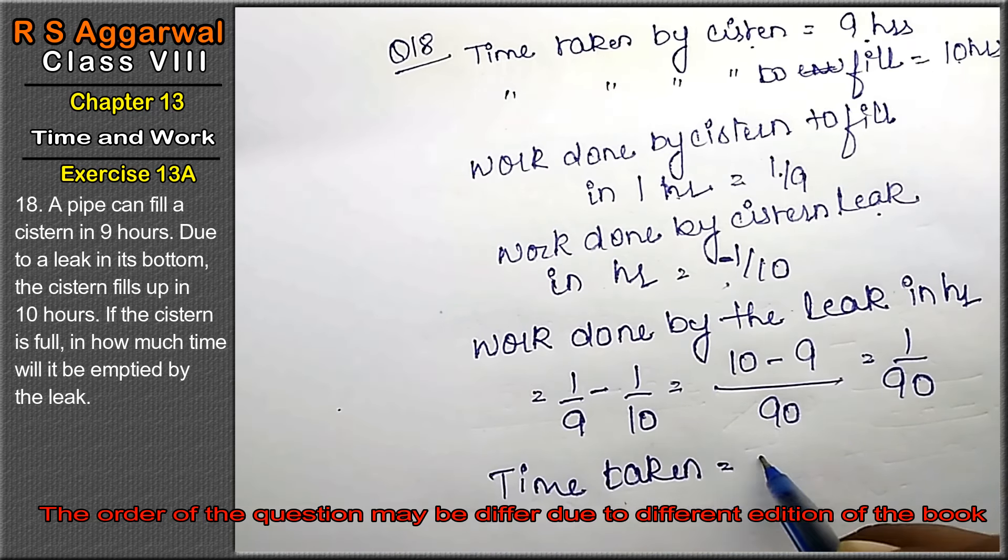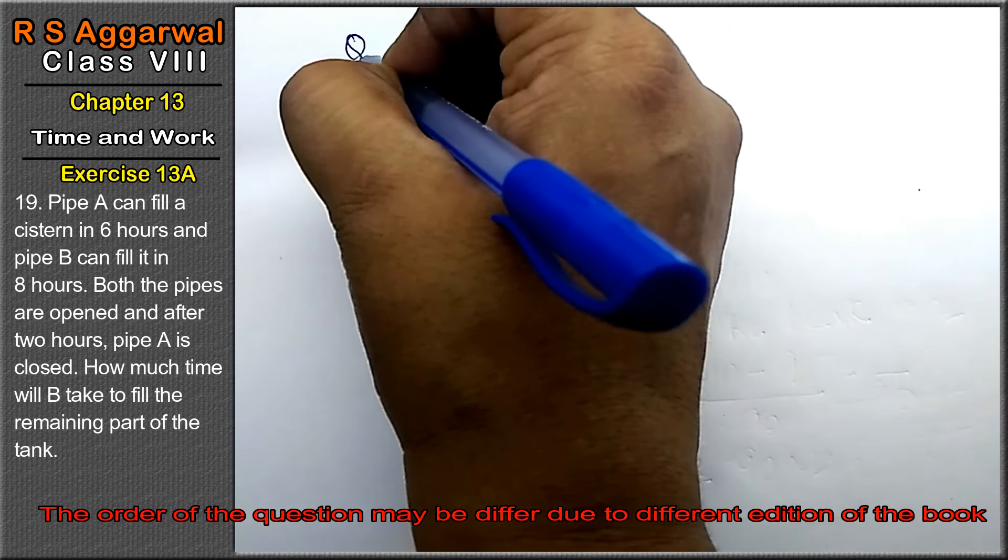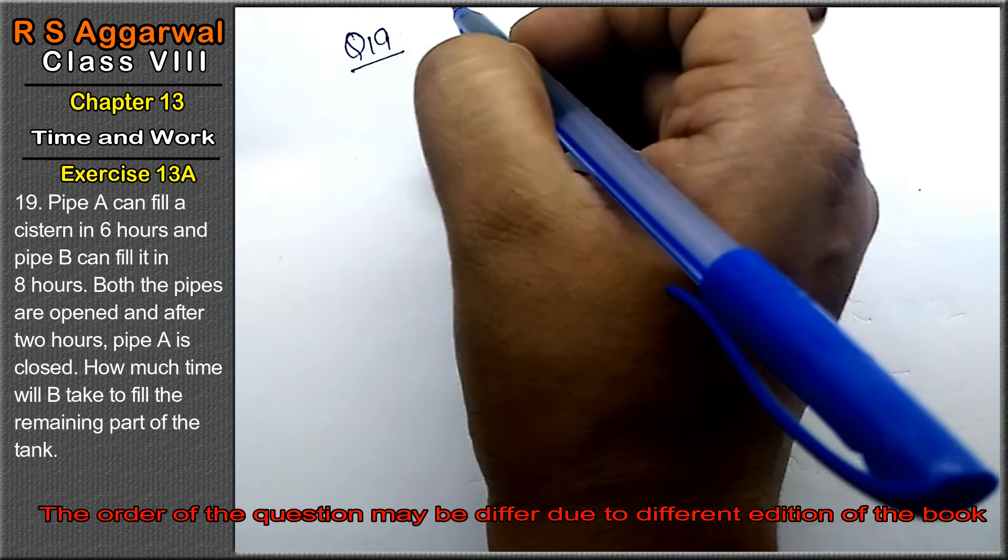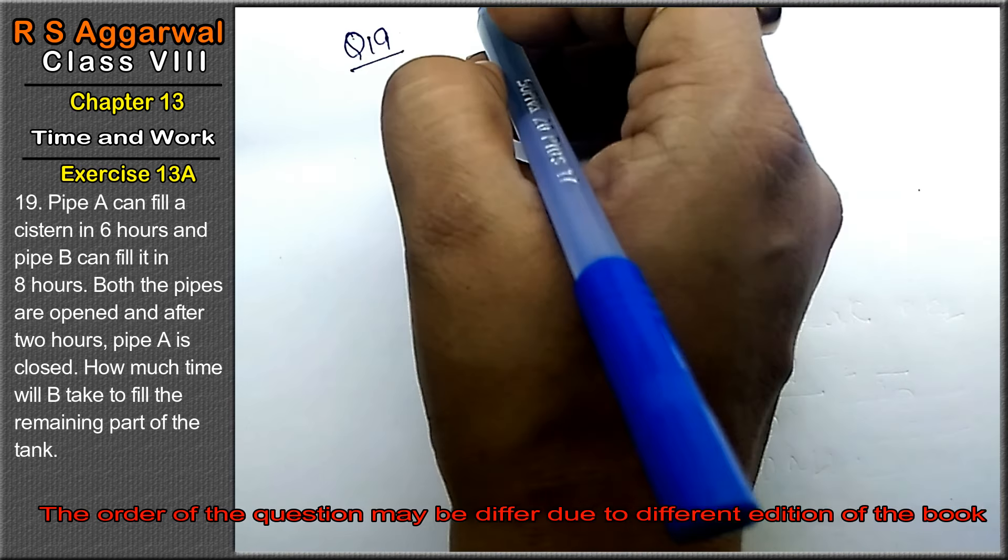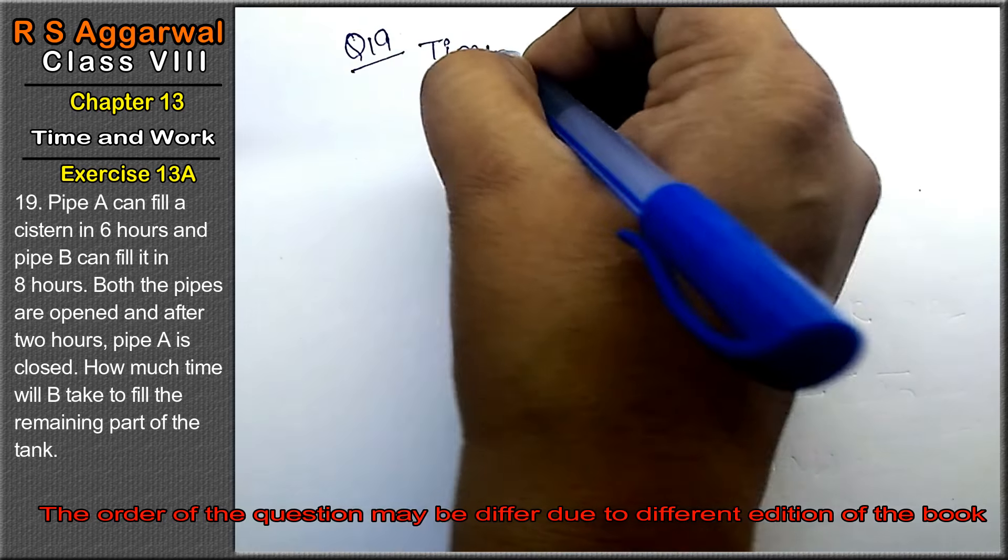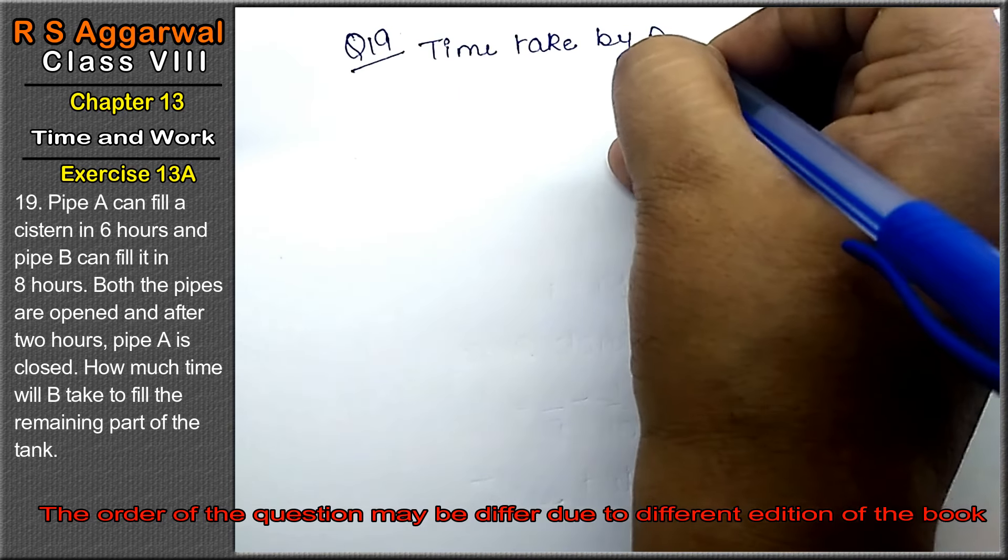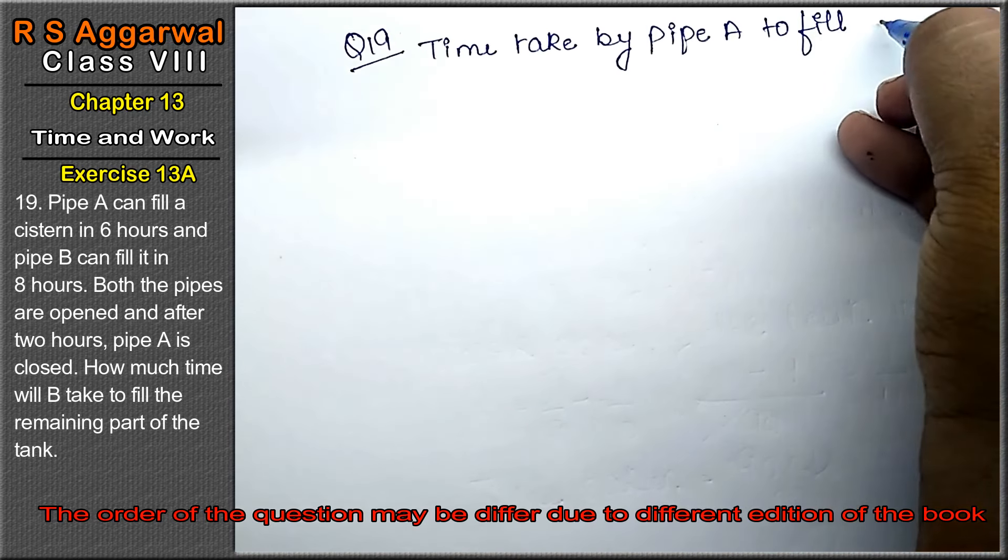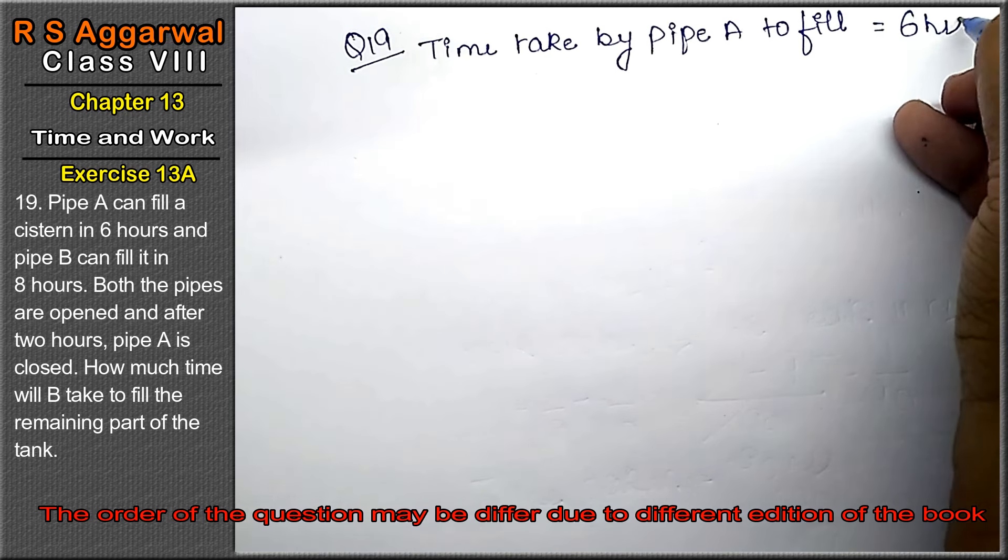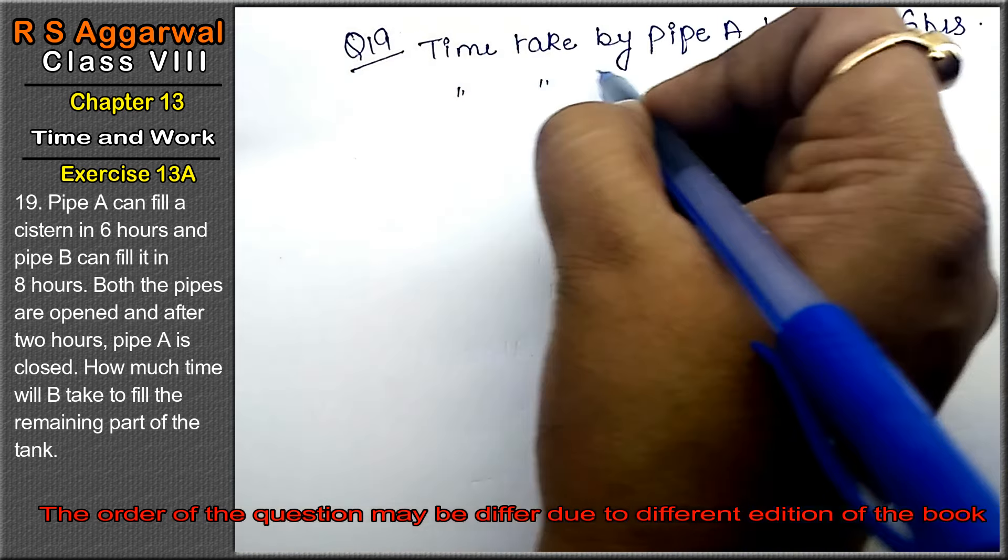Let's do question number 19 of exercise 13A, time and work. Question number 19: pipe A can fill a cistern in 6 hours. So time taken by pipe A to fill equals 6 hours, right friends?